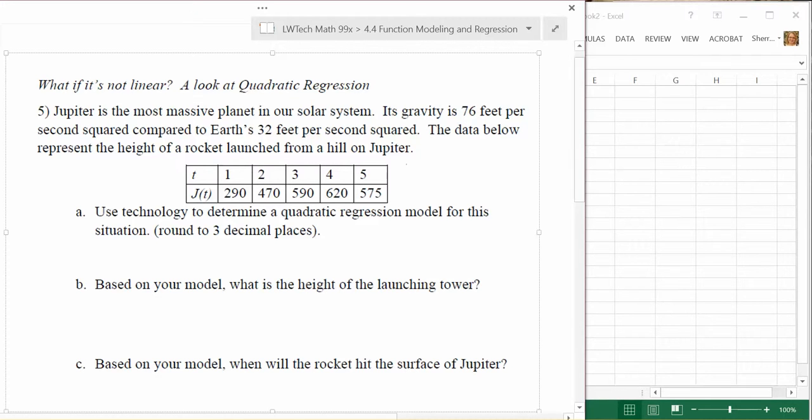If we look at the data points here, we have t, which represents the time in seconds. This is our input value. Sometimes we can think of this in terms of t, but because it's our input we can also think of it in terms of x, which is sometimes helpful when we're using other programs to do calculations. J of t represents the height of the rocket on Jupiter in feet, and since this is our output, that will correlate with a y value.